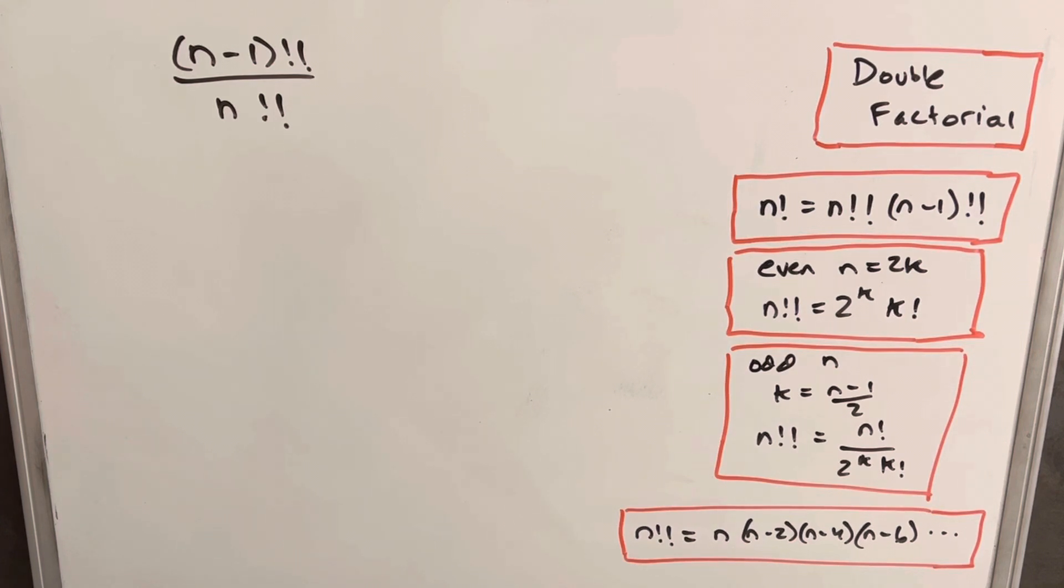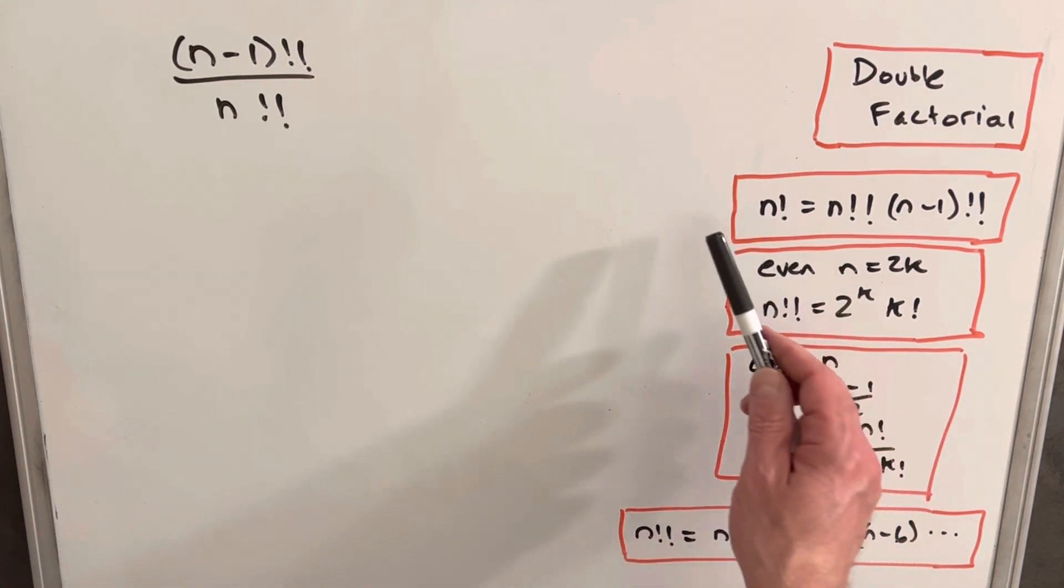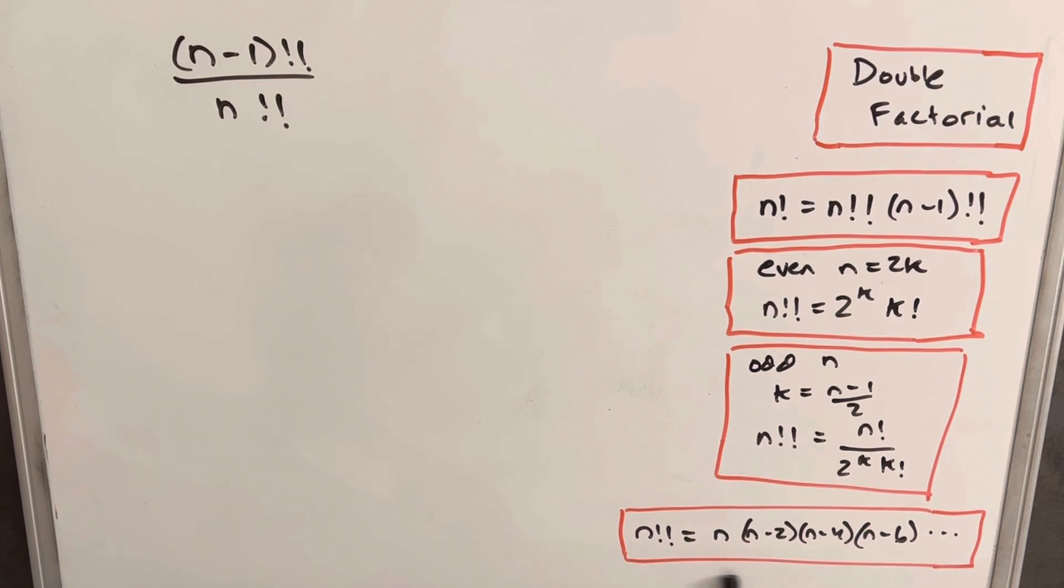And we want that expression to not have any double factorials, but it can have factorials. In the previous video, I did an introduction on double factorials. We derived these formulas on the right, including the definition of the double factorial. If you need to review that or you're just interested, I'll provide a link in the description and you can watch that one.